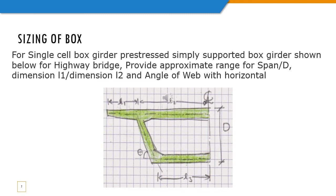Sizing of a box girder is a first step in bridge design. For single cell box girder, simply supported shown in figure below provide approximate range for span to depth ratio, L1 over L2 dimension and angle of web with horizontal theta.